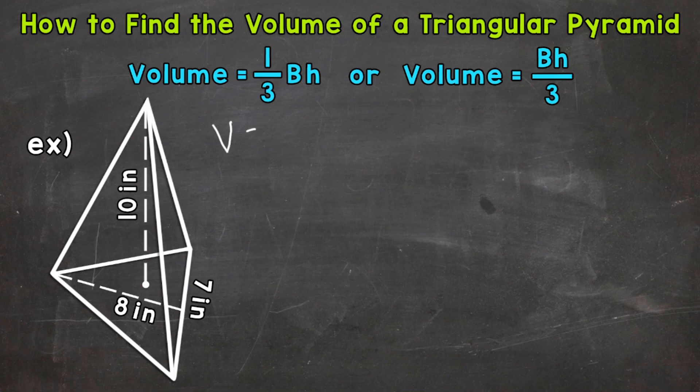So volume equals 1 third times the area of the base times the height. Now we plug in. So volume equals 1 third. Now we need to calculate the area of the base. So this triangular base right here. And we're going to go off to the side in order to calculate this.